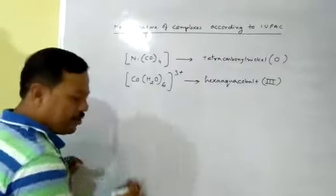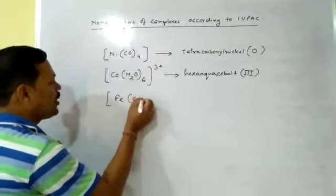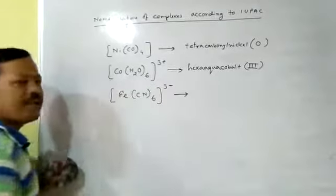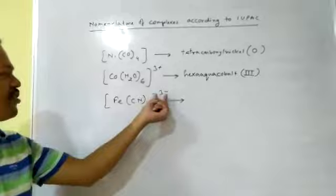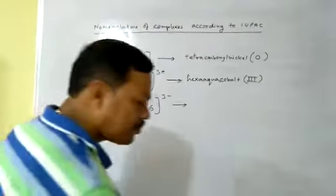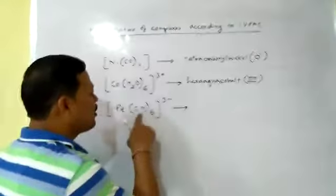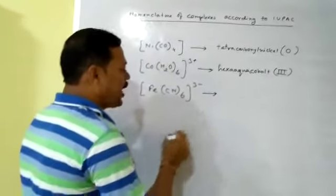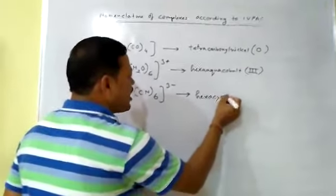Now consider another complex: [Fe(CN)₆]³⁻, which has a 3− charge outside the square bracket. This is an example of an anionic complex because it contains a negative charge outside the square bracket. Here the ligand CN⁻ is called cyanido. How many cyanido? Six — so hexacyanido.